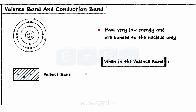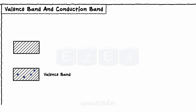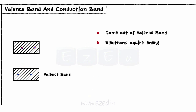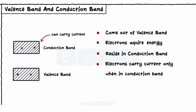When in the valence band, electrons neither form any bond with other atoms nor can they carry the current. To become free and carry the current, these electrons come out of the valence band by acquiring energy and reside in the higher energy band known as the conduction band. Thus only those electrons which are in the conduction band carry the current.